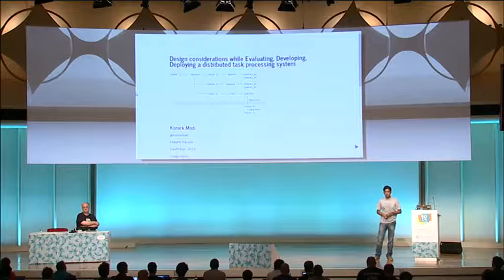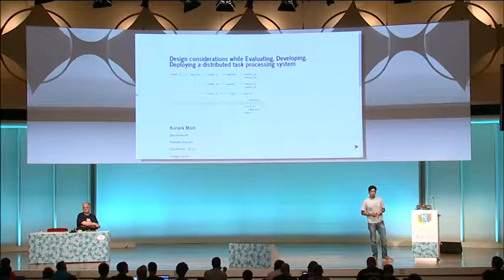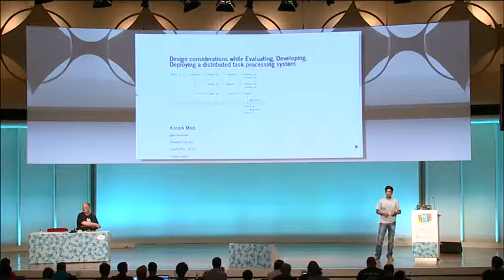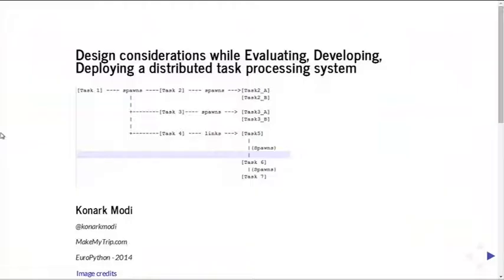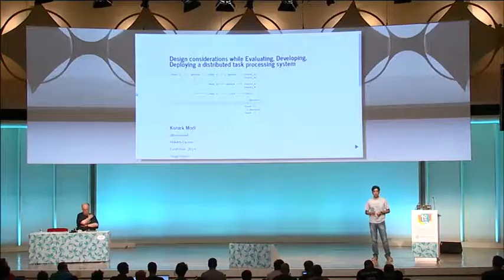I say developing, evaluating, or deploying because you might start with your own stuff — you might want to write a framework right from scratch, or you might be evaluating frameworks available in the market for distributed task processing, or you've shortlisted one and now want to deploy it. These are basically my learnings over the past year and a half playing around with a framework known as Celery — what are the essential components a distributed task processing system should have.